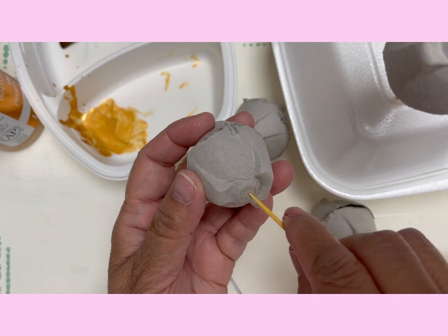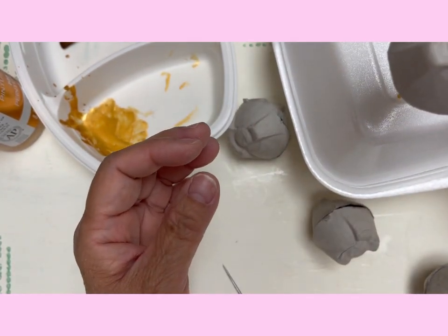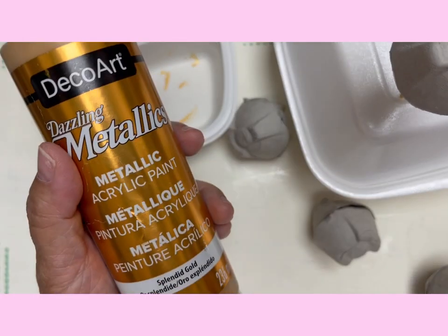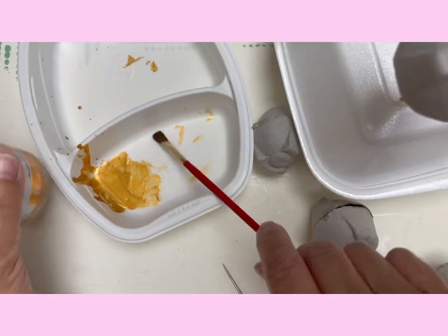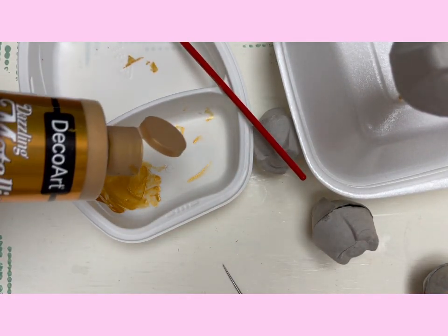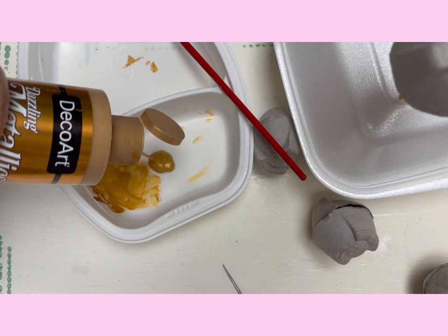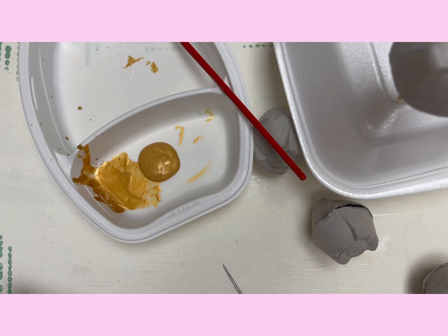So I'm going to be using a metallic gold paint, and I'm just going to pour it here in this plastic container. I'm going to be painting one of these pink because I have a grandson who loves pink.